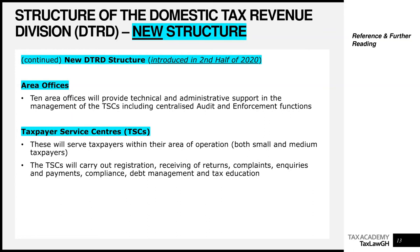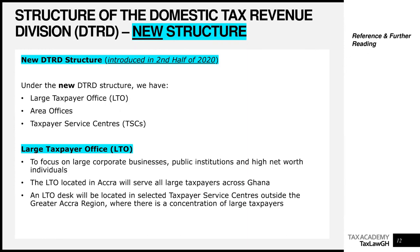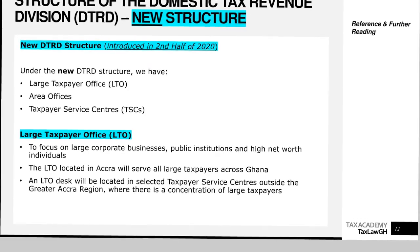For example, the Legon Medium Taxpayer Office will be rebranded to the Legon Area Office and Legon Taxpayer Service Centre. The taxpayer service centres will carry out registration, receiving returns, handling complaints and inquiries, payments, compliance, debt management, and tax education. To summarize the new structure: a Large Taxpayer Office, Area Offices, and Taxpayer Service Centres — the old system of LTO, MTO, and STO is gone.